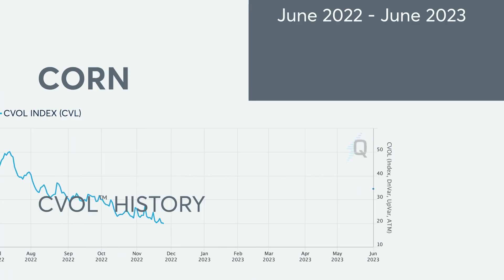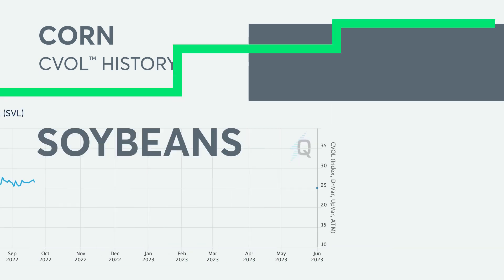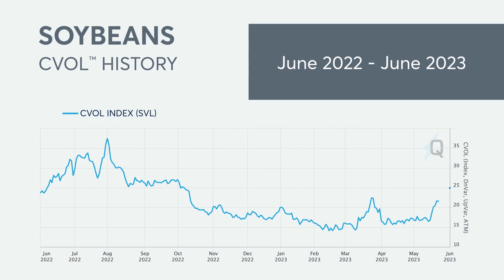Now let's take a look at some key volatility indexes, which can be found on cmegroup.com. The Corn Seavall Index rose from 25.36 on May 1st to 33.20 on May 31st. For soybeans, we saw Seavall rise from 16.81 on May 1st to 24.19 on May 31st, the highest level since last fall.